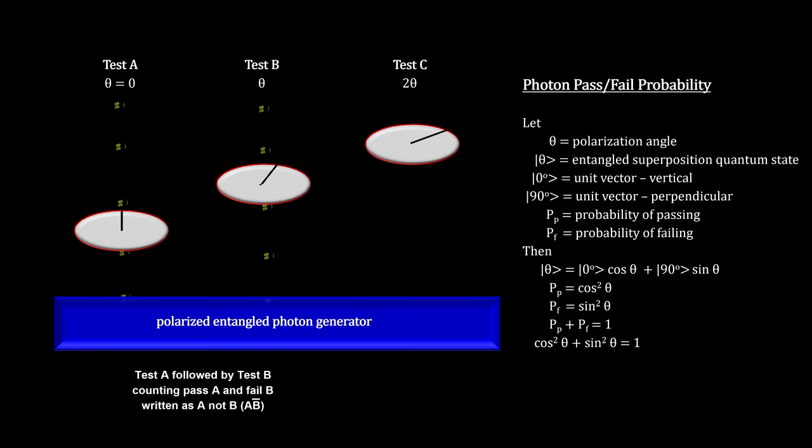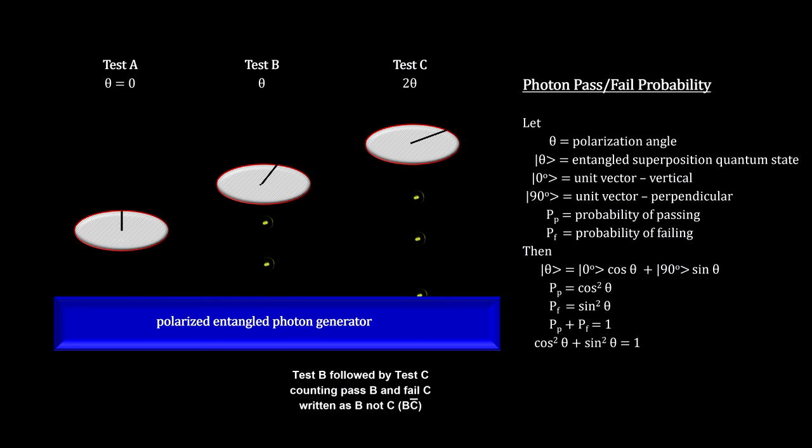What Bell was looking for are the number passing test A, followed by failing test B, called A-not-B. The number passing test B, followed by failing test C, called B-not-C. And the number passing test A, followed by failing test C, called A-not-C.